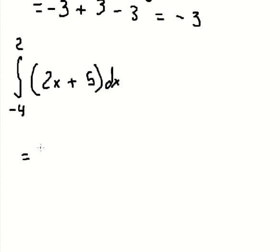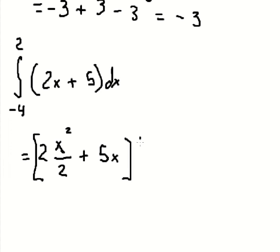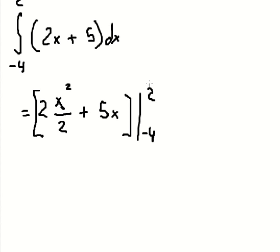The integral of s is about s squared over two minus five s. We put the bounds from negative four to positive two. Substituting the upper bound: two divided by two gives us one, so we put two in here, and negative four in here.